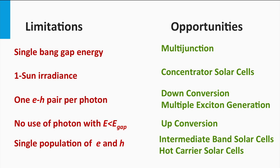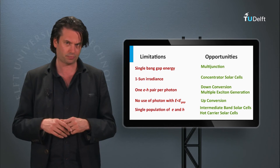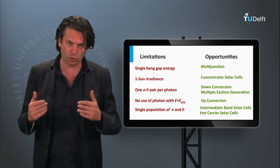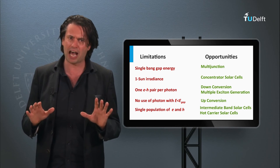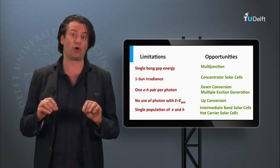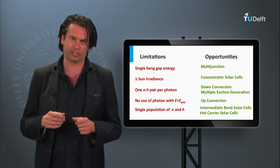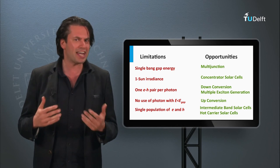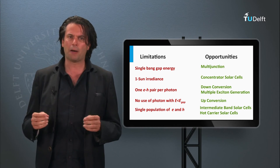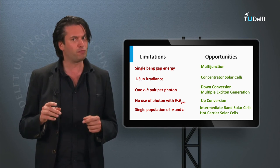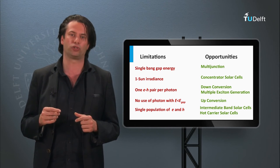Another theoretical solution is the concept of intermediate band solar cells — a concept in which intentionally an electronic band within the bandgap is engineered, to enable photons below the bandgap to help additional electrons to be excited. Note that besides the multijunction and concentrator approach, none of these concepts have resulted in high efficiency solar cells or even been demonstrated yet. These other concepts are still in a fundamental research phase. Here I will give you a quick introduction to down conversion, multiple exciton generation, up conversion, hot carrier solar cells and intermediate band solar cells.